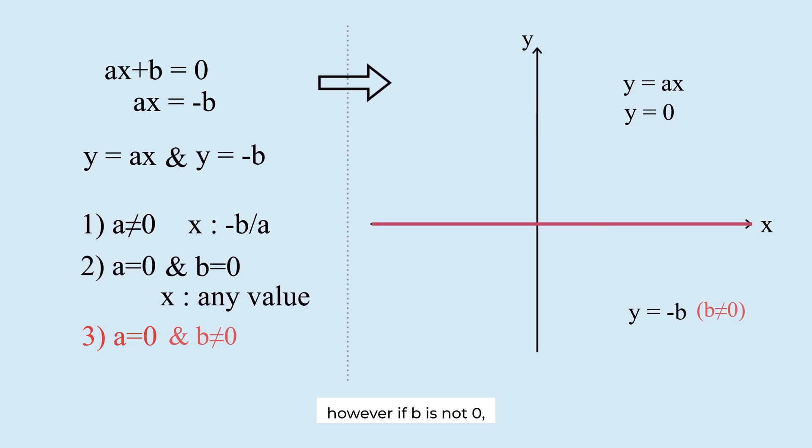However, if b is not 0, the graph of y equals minus b lies above or below the x-axis parallel to the graph of y equals 0. There are no intersection points between the two graphs. There is no solution.